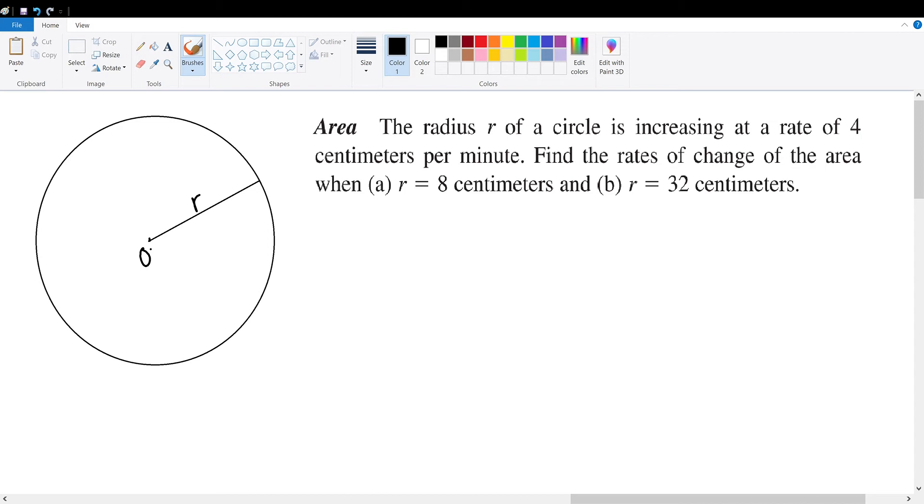The radius r of a circle is increasing at a rate of 4 centimeters per minute. Find the rates of change of the area when (a) r equals 8 centimeters and (b) r equals 32 centimeters.